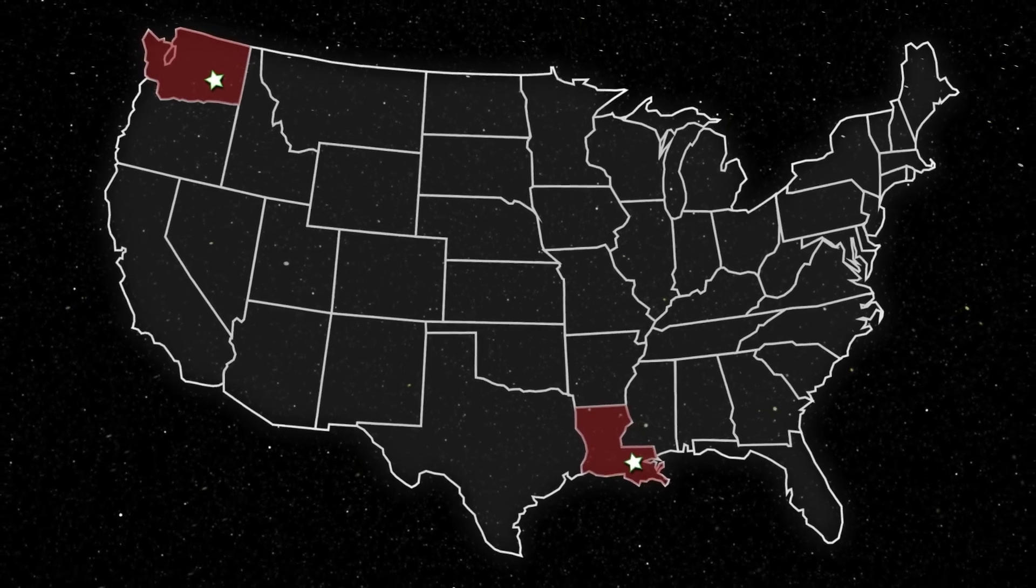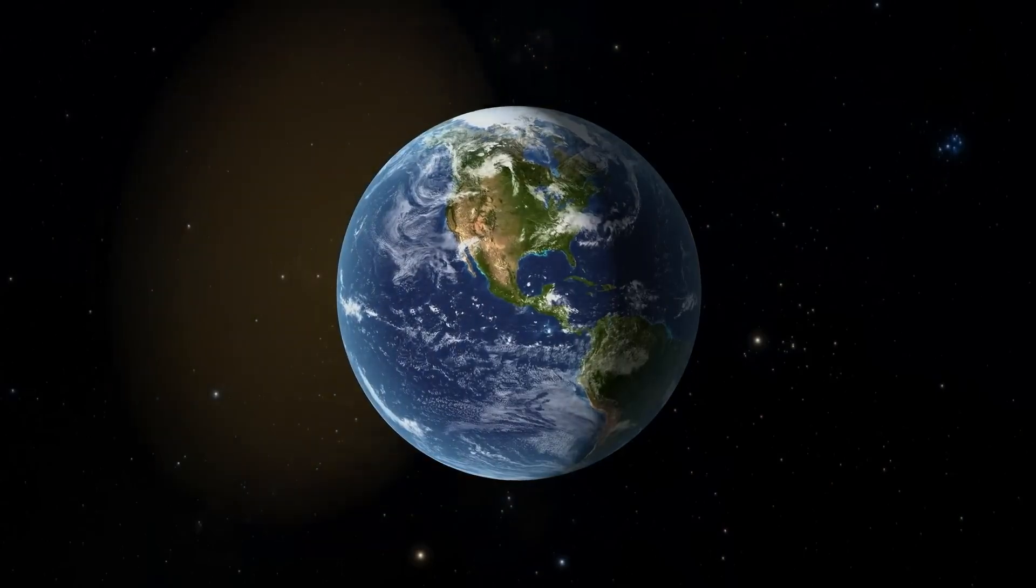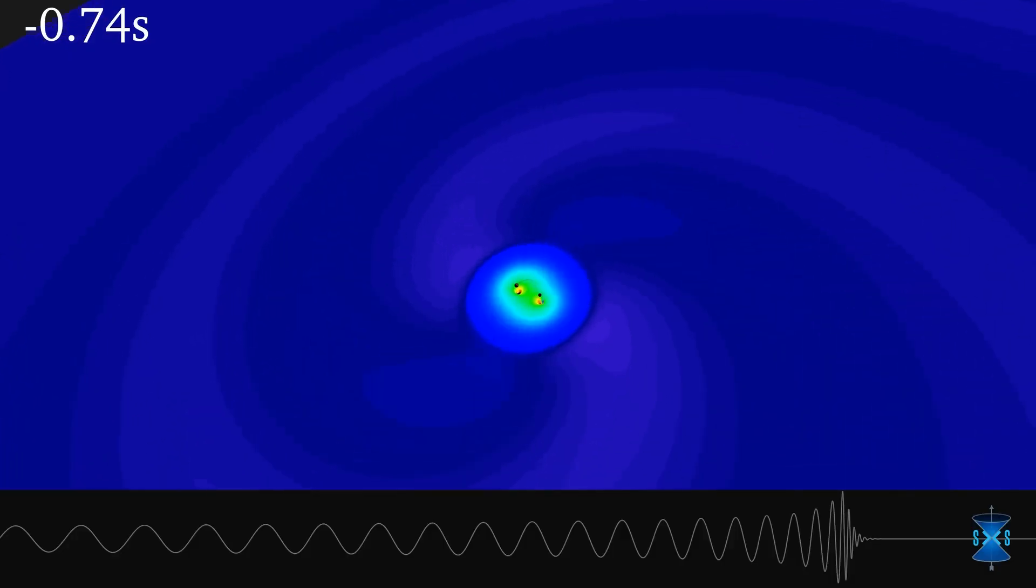The detection of these gravitational waves required two interferometers, 3,000 kilometers across the continental United States, to measure the same impossibly small signal 10 milliseconds apart. The signal was caused by two black holes merging.